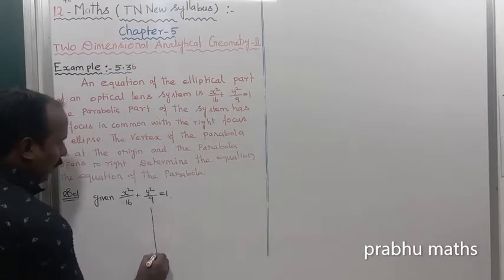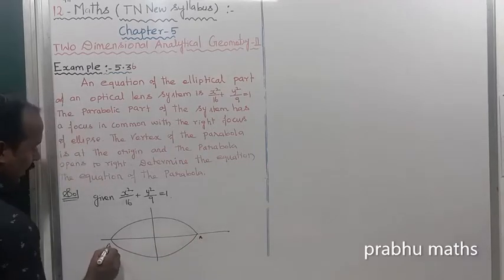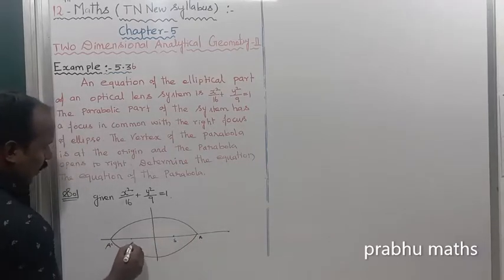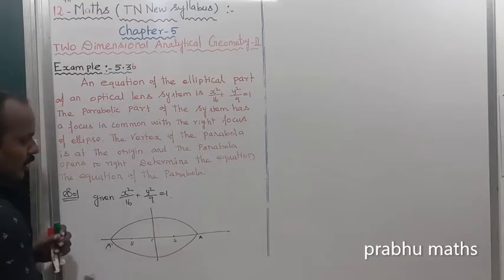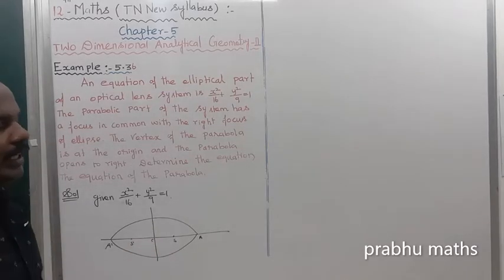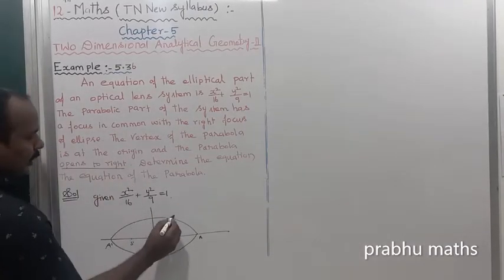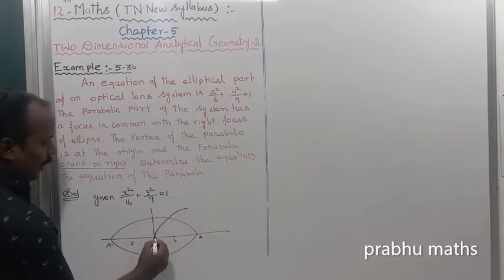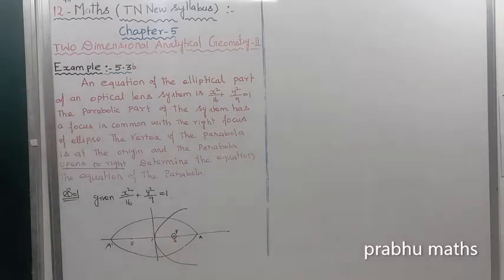Looking at the parabolic format, we label the diagram: point A, point A dash, focus S, and focus S dash. The distance from center C to focus S is equal to AE, which is denoted by C. The parabola opens to the right, and the focus is common to both the parabola and the ellipse.